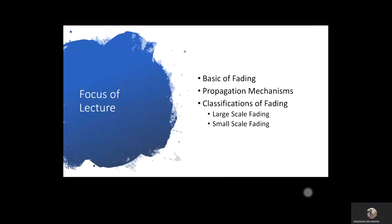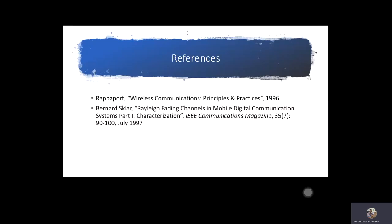For the first series, I'm going to focus on three different aspects of fading fundamentals: the basics of fading, the propagation mechanism, and the two broad categories of fading — large scale fading and small scale fading. The references I use are Rappaport's book published in 1996, and Bernard Sklar's paper on satellite communication published in 1997, which has received close to 1900 citations. Rappaport is very prominent in terms of channel modeling.